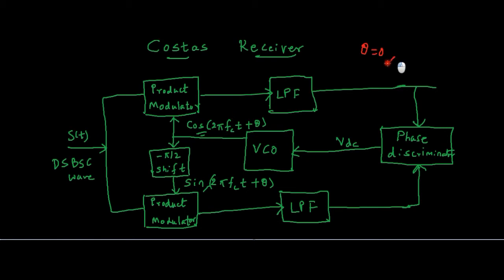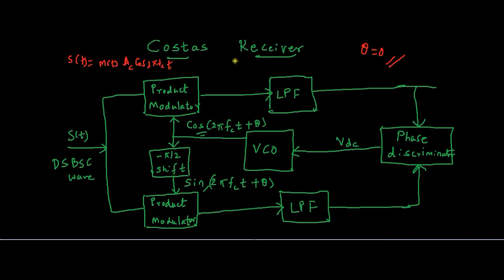In that case, let θ = 0. Then S of T gets multiplied with cos(2πFct), and then it is passed to the low-pass filter. S of T is M(t)·Ac·cos(2πFct). So M(t)·Ac·cos(2πFct) multiplied with cos(2πFct) — since θ = 0 — and passed through the low-pass filter gives us the output (Ac/2)·M(t)·cos(θ).